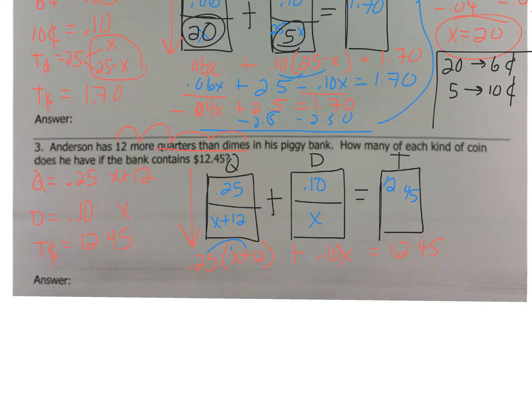Now, we're going to distribute. So, we get 0.25x plus 3 plus 0.10x is going to equal to 12.45, right? Now, let's combine our like terms. And, again, be careful with your decimals here. Put that together, you get 0.35x plus 3 equals 12.45.